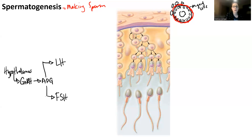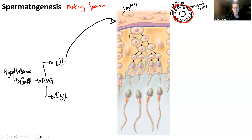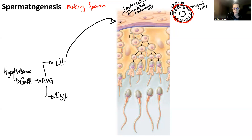LH and FSH essentially target different cells in the seminiferous tubules and cause spermatogenesis. LH is going to target the Leydig cells — sometimes called interstitial endocrine cells. Interstitial just means between, and endocrine means it makes a hormone. So LH targets the interstitial endocrine cells, and what those cells do is produce testosterone.